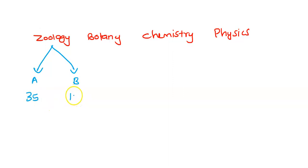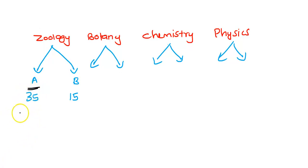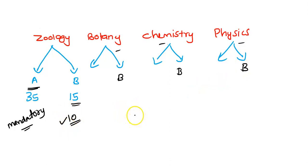In Section B, there are questions related to different topics. For each subject in Section B, you have 15 questions available but you only need to answer 10 questions. That means we will attend around 180 questions in total.